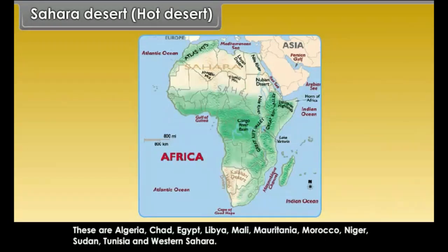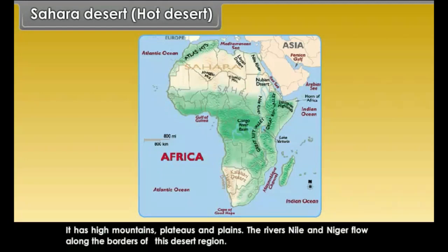The 11 countries are Algeria, Chad, Egypt, Libya, Mali, Mauritania, Morocco, Niger, Sudan, Tunisia, and Western Sahara. It has high mountains, plateaus, and plains. The rivers Nile and Niger flow along the borders of this desert region.